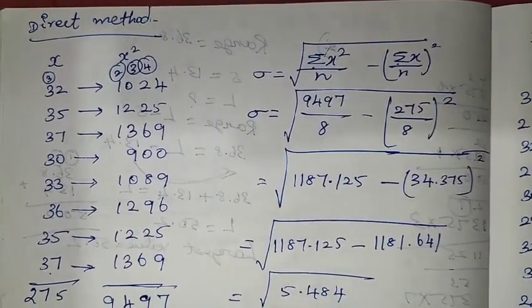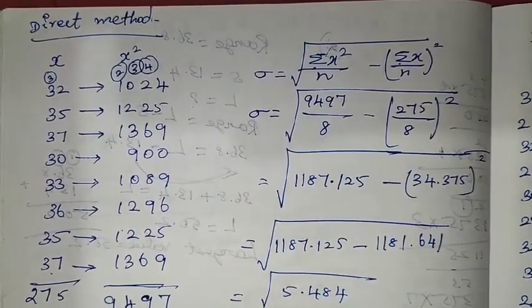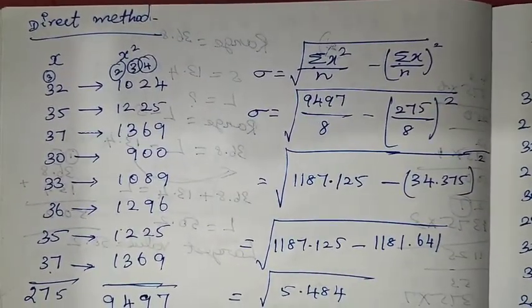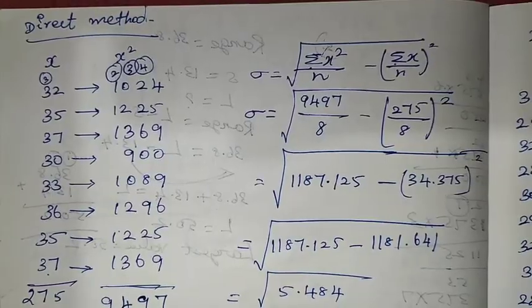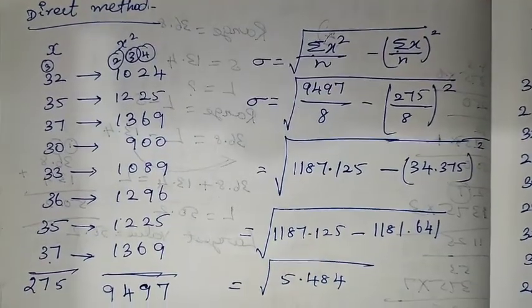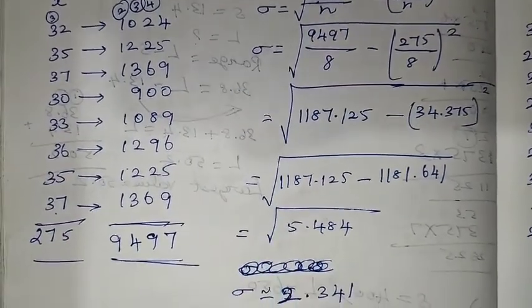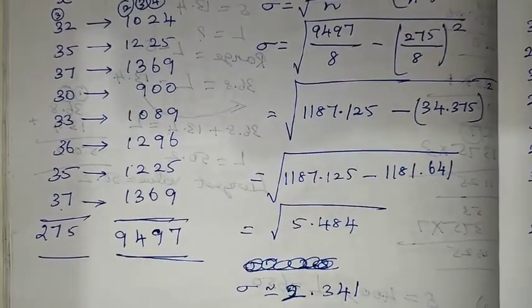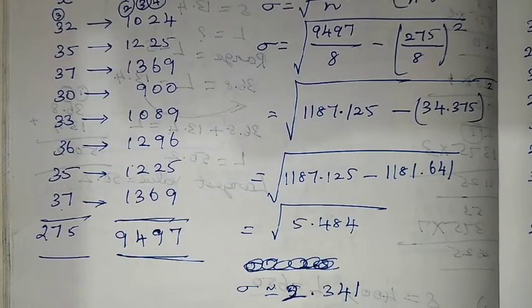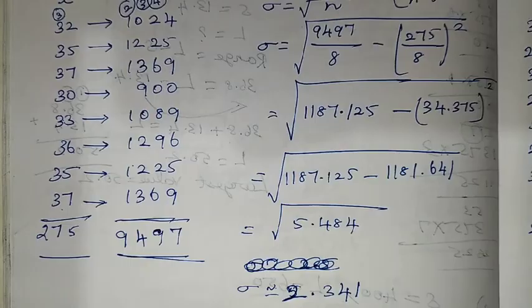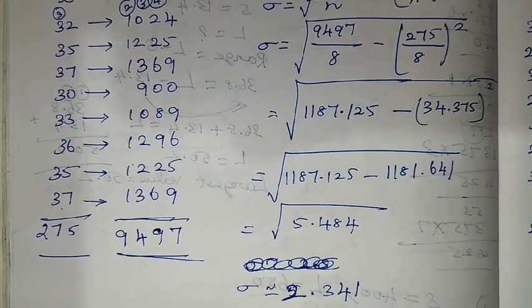So using the direct method, the standard deviation is 2.34. Thank you so much for watching, students. Bye-bye.